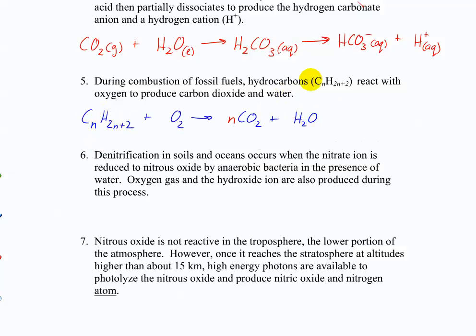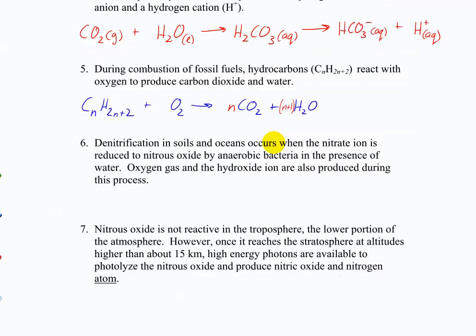So we've got 2N plus 2 over here. How many waters, then, do we need to balance that? Whatever we put in front is going to be multiplied by 2 and needs to equal 2N plus 2. So what do we put in front? N plus 1. All right, because N plus 1 quantity times 2 is 2N plus 2.